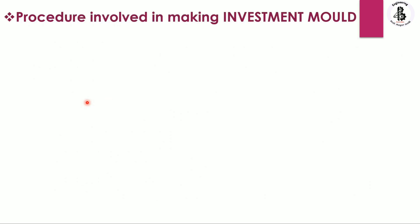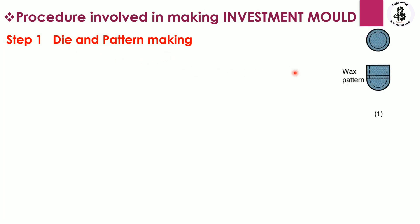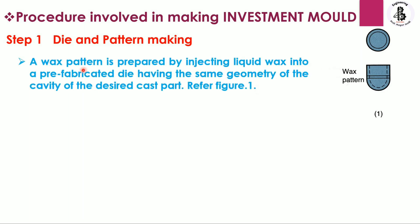Let us start with step number one: die and pattern making. The pattern material here is wax, which can be easily converted into the desired shape and size as per requirements. A wax pattern is prepared by ejecting liquid wax into a pre-fabricated die having the same geometry as the cavity of the desired cast product.